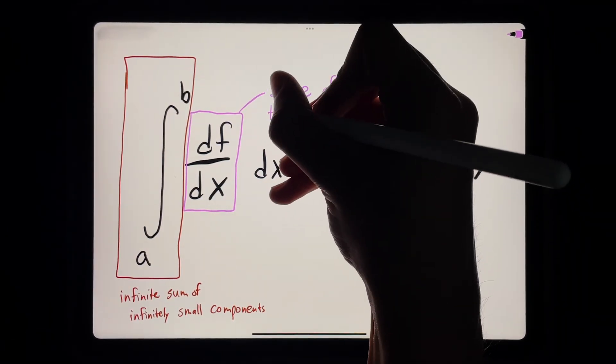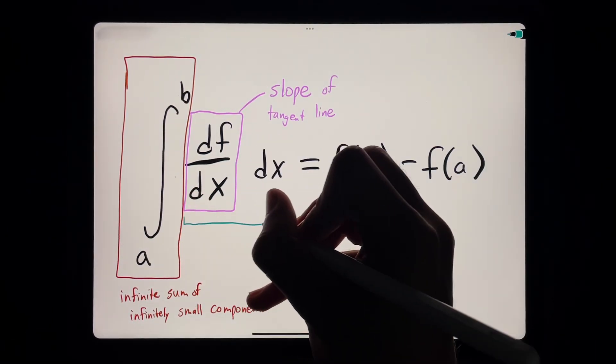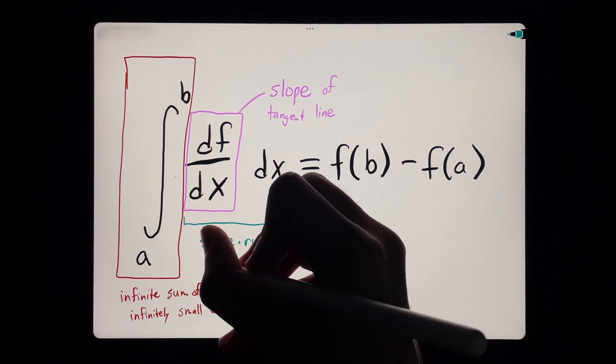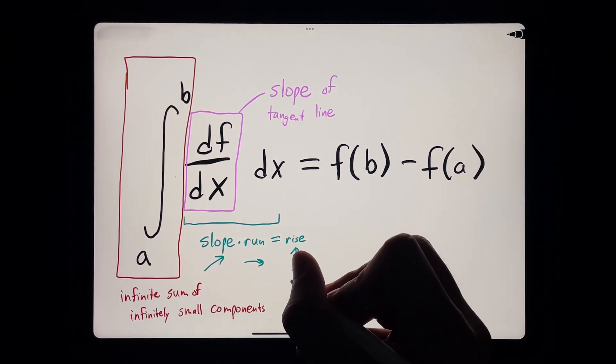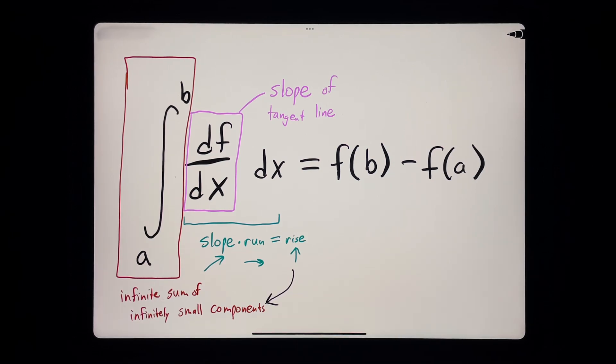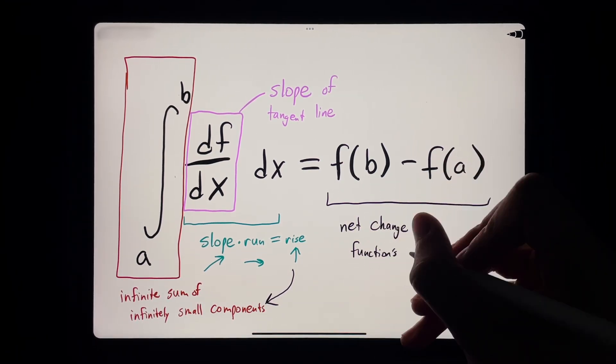Multiplying a slope by an infinitely small run gives us an infinitely small rise, and taking the infinite sum of all the rises gives us the total rise. And that total rise is the net change of our function.